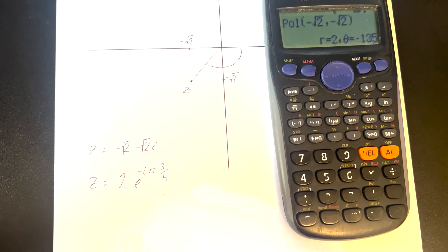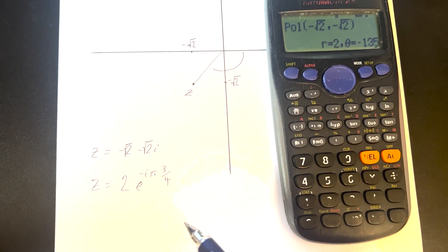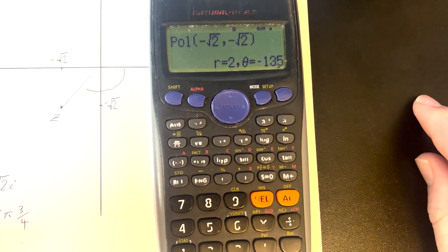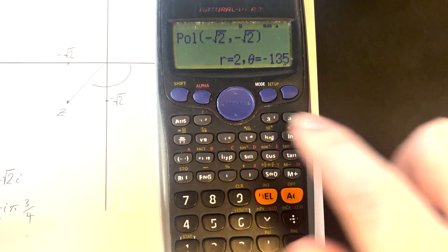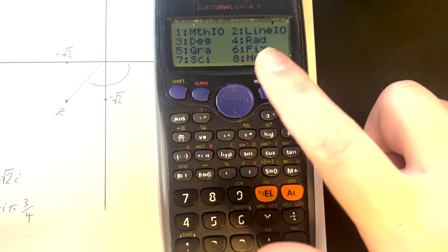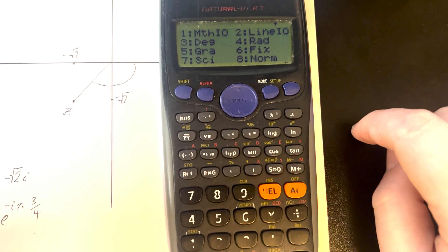And that's how we can convert from rectilinear form into polar form with our calculators. As an added bonus, if we don't want to write it with degrees, we can change it in the setup to degrees, radians, or gradians.